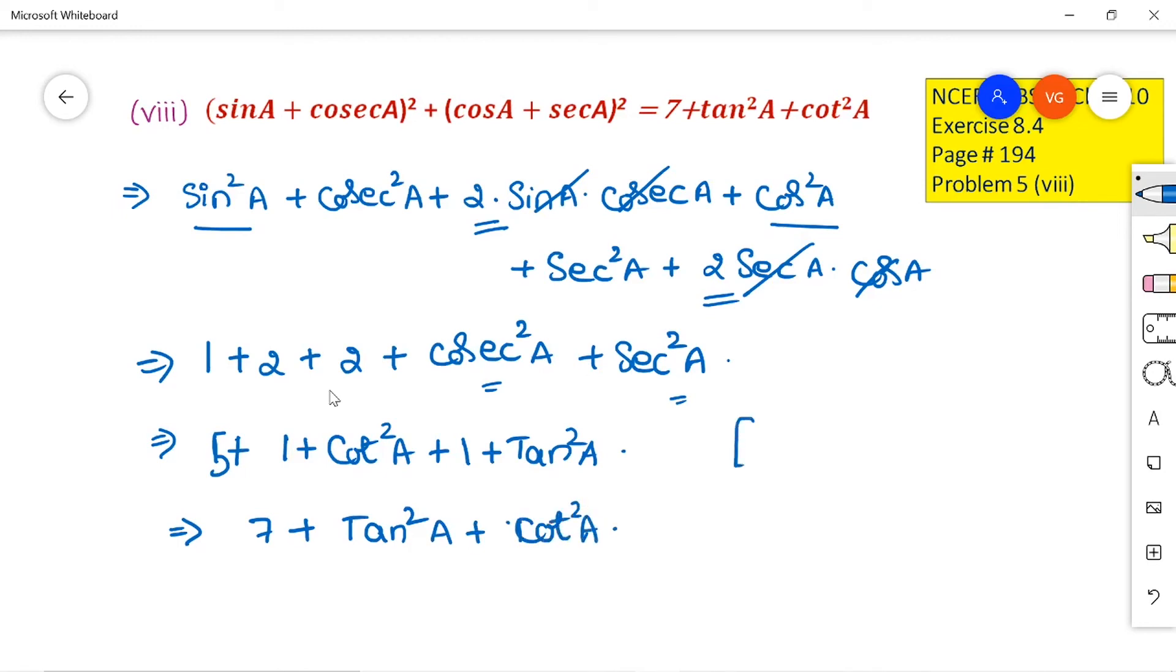Don't forget to mention all the 3 identities here that in the first step I have used sin²A + cos²A = 1. And in the third step I have used this cosec²A and sec²A.